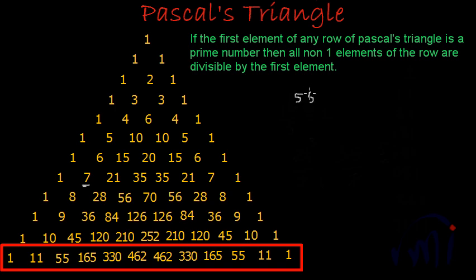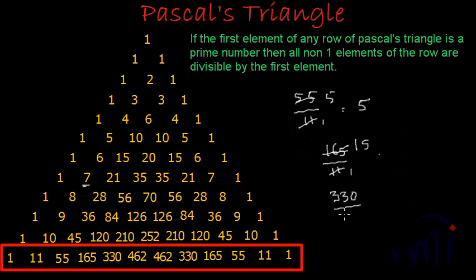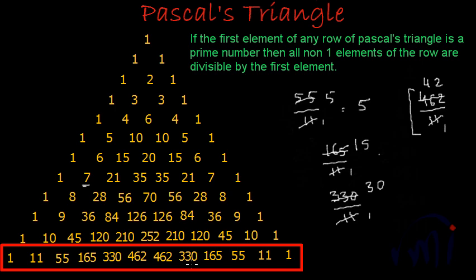Fifty-five divided by eleven gives five. The third element, one hundred sixty-five, divided by eleven gives fifteen. Three hundred thirty divided by eleven gives thirty. Four hundred sixty-two divided by eleven gives forty-two. The rest of the elements in this row are just repetitions: four sixty-two, three thirty, one sixty-five, fifty-five, and eleven. All of them are divisible by eleven.